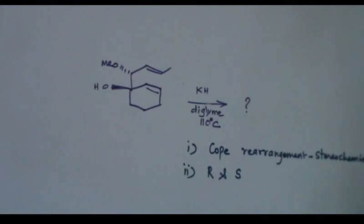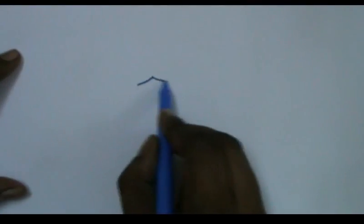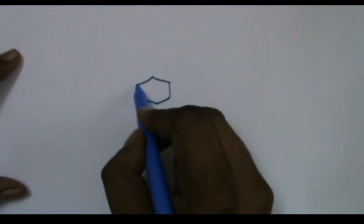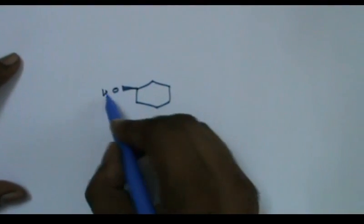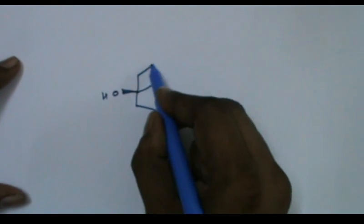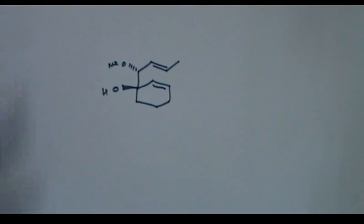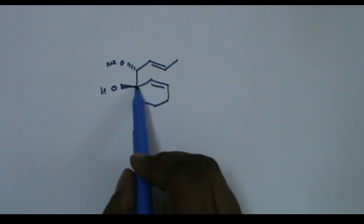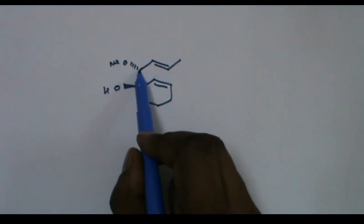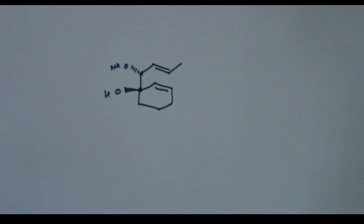Now, let us go to the given compound and assign R and S configuration. This is the given compound. What is the configuration of this center and this center? There are two chiral centers. What are the configurations, R or S?